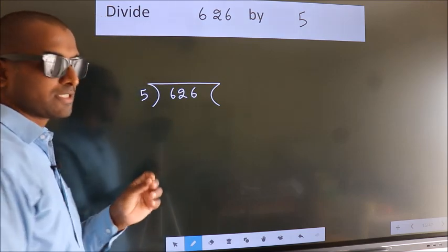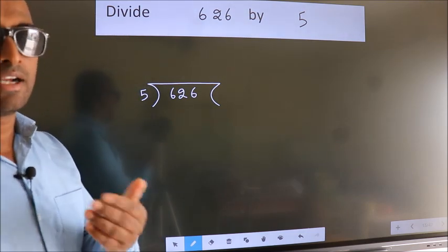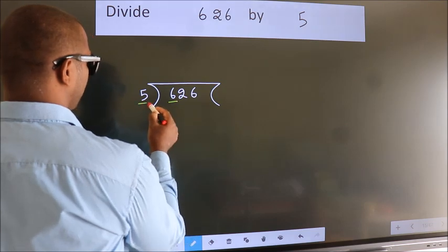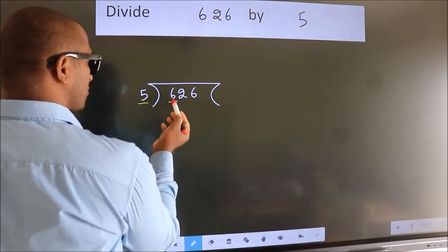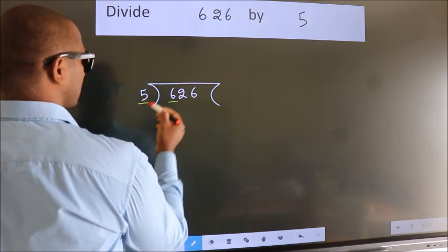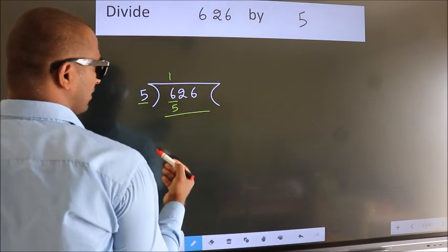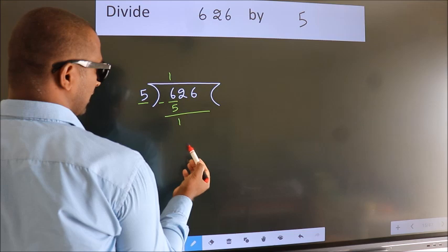This is your step 1. Next, here we have 6, here 5. A number close to 6 in 5 table is 5 once 5. Now, we should subtract. We get 1.